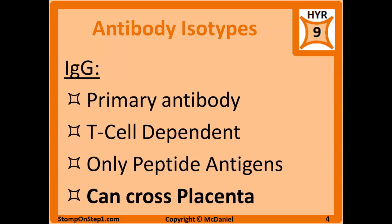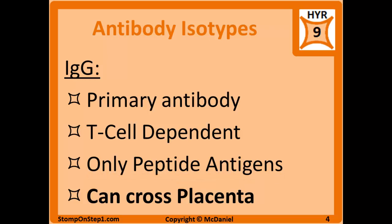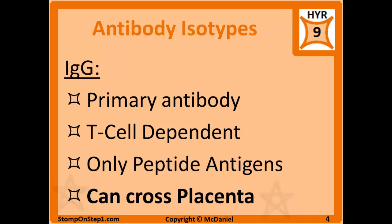IgG is the main antibody found in the blood. It requires interaction with helper T cells, making its activation helper T cell dependent, and therefore it can only be formed in response to a peptide antigen. A host with severe T cell immunodeficiency, like AIDS, will not be able to produce IgG. This also means that a carbohydrate antigen will not produce IgG. Importantly, IgG is the only immunoglobulin that can cross the placenta from mother to fetus — a fact that test writers love to include.